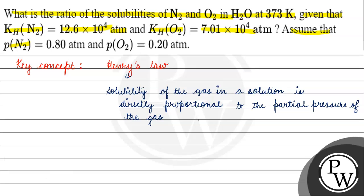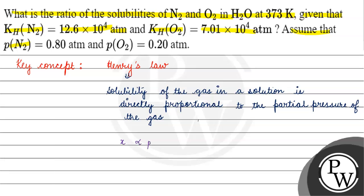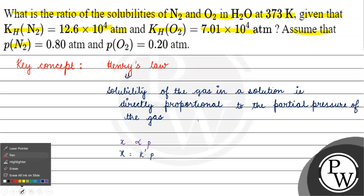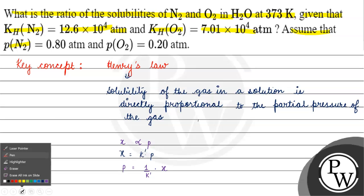We can write: x (which is solubility) is directly proportional to the partial pressure of the gas. So x equals k' (a proportionality constant) into P. If we want to write P, the partial pressure of the gas, then P equals (1/k') into x, where x is the solubility.